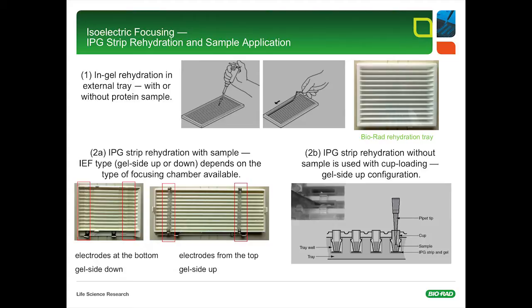IPG strips rehydrated with sample can be run in two different configurations, gel side up or gel side down, depending on which focusing trays are available. Highly recommended is gel side up focusing. This strategy usually leads to better and more reproducible results. If IPG strips are rehydrated without sample, then sample application is done with sample cups placed on the gel of the IPG strip, usually on the acidic side. Sample cups offer an alternative method of sample loading and can often improve resolution, especially at extreme pH ranges and for hydrophobic proteins.